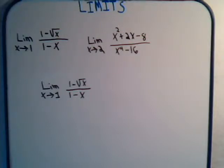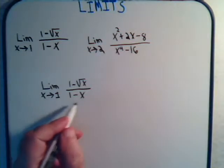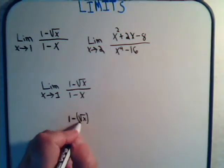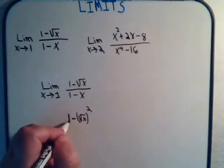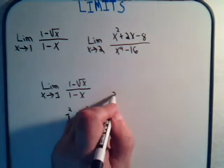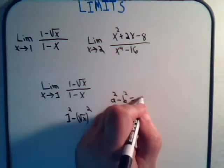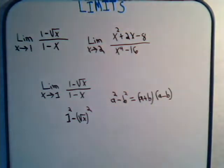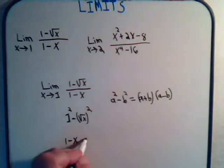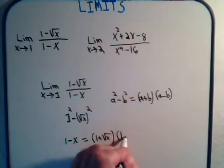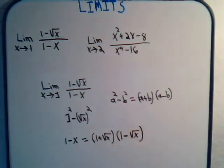If we look at the denominator, we can rewrite 1 minus x as 1 squared minus the square root of x squared, which gives us a difference of two squares. Remember, a squared minus b squared equals a plus b times a minus b. So 1 minus x can be written as 1 plus the square root of x times 1 minus the square root of x.